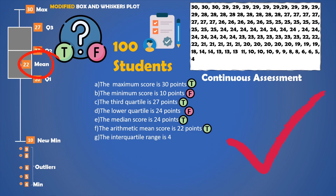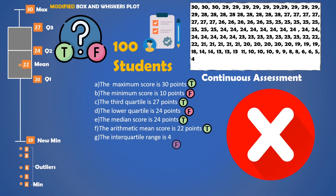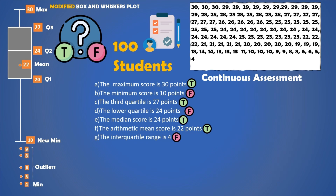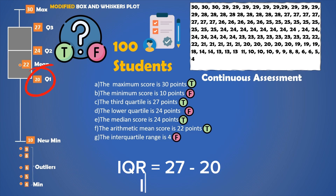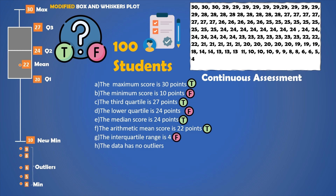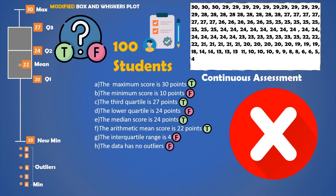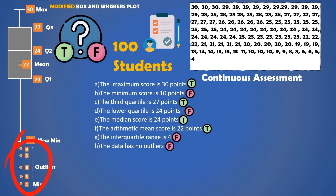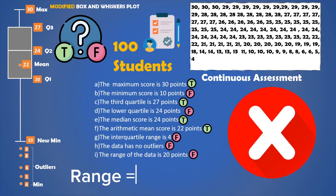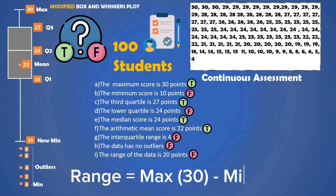The interquartile range is 4 — this is false. The interquartile range, which is the third quartile minus the first quartile, is 27 minus 20, and that's 7. The data has no outliers — well, this is a big false. You can see there are multiple outliers on the lower end. The range of the data is 20 points — this is also false, because the range is the highest value minus the lowest value. The highest value is 30 and the lowest value is 4, so our range is actually 26.